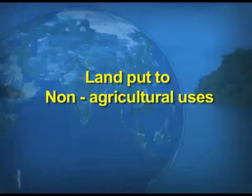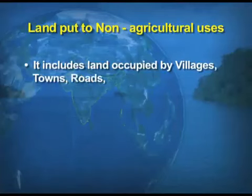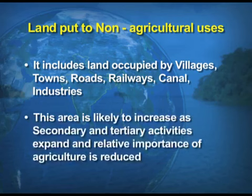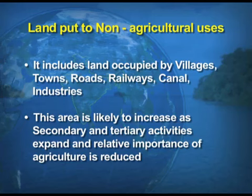The next land use category is land put to non-agricultural uses. All uses other than growing crops on agricultural land are non-agricultural uses — for example, villages, towns, roads, railways, or industries. This area is likely to increase as secondary and tertiary activities expand, because people are shifting from rural to urban areas in search of better employment opportunities.